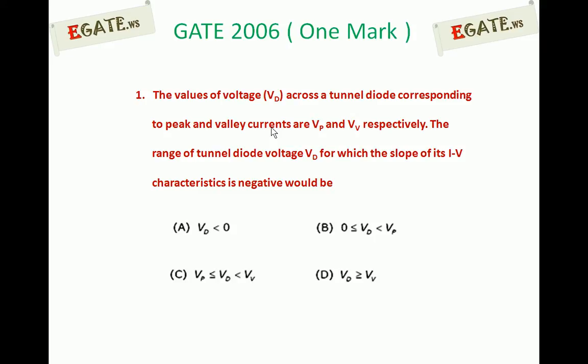The values of voltage across a tunnel diode corresponding to peak and valley currents are Vp and Vv respectively. The range of tunnel diode voltage Vd for which the slope of its IV characteristics is negative would be: A. Vd less than 0, B. Vd between 0 and Vp, C. Vd between Vp and Vv, D. Vd greater than or equal to Vv.